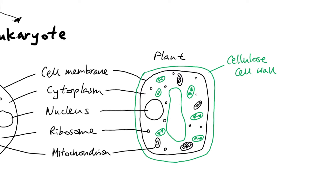Next is the structure in the middle — it's not hollow but is filled with fluid. It's called the large permanent vacuole, and it contains the cell sap with lots of water and mineral ions, and also plays a role in maintaining the shape of the plant. Make sure you always write 'large vacuole,' 'permanent vacuole,' or 'large permanent vacuole' when referring to this, because even though animal cells don't generally have vacuoles, they can occasionally have small temporary ones that appear and disappear depending on water content.